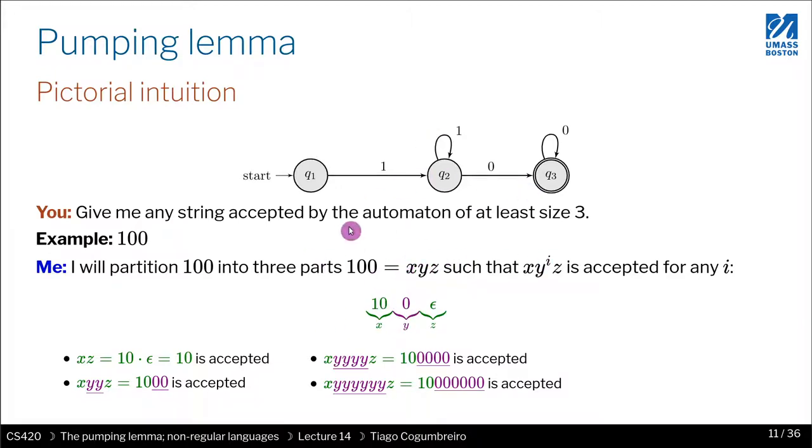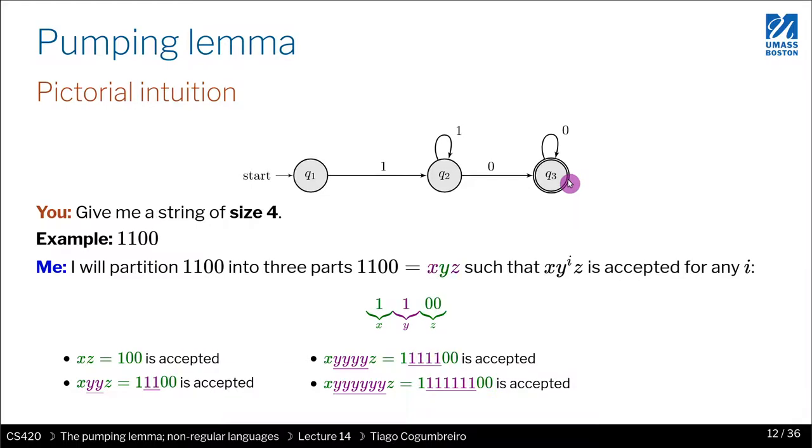If I omit the zero altogether I have 10 which is also accepted. Then 10 with the loop twice is also accepted, and if I go three times it's obviously accepted, and if I go a thousand times it would also be accepted.